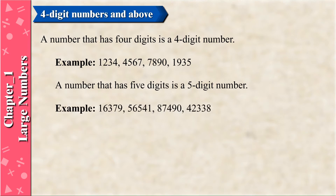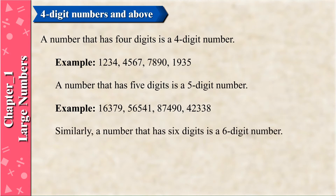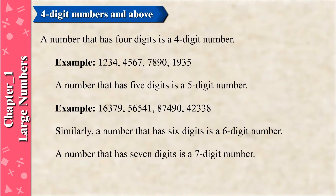Examples of five-digit numbers: 16,379; 56,541; 87,490. Similarly, a number that has six digits is a six-digit number. A number that has seven digits is a seven-digit number.